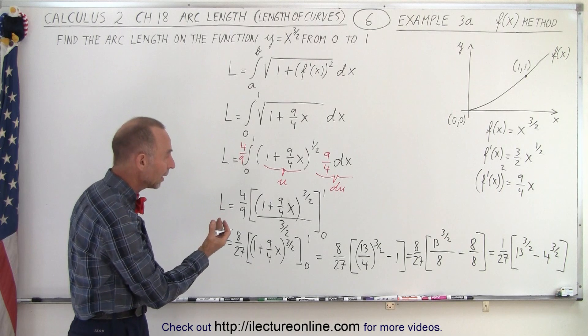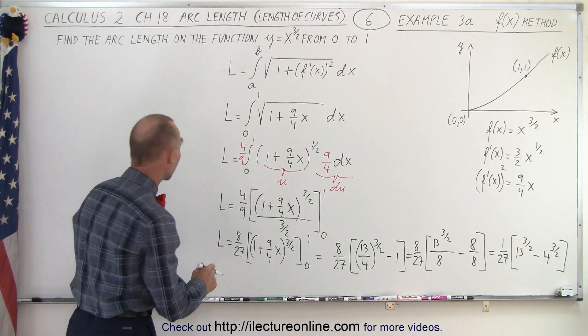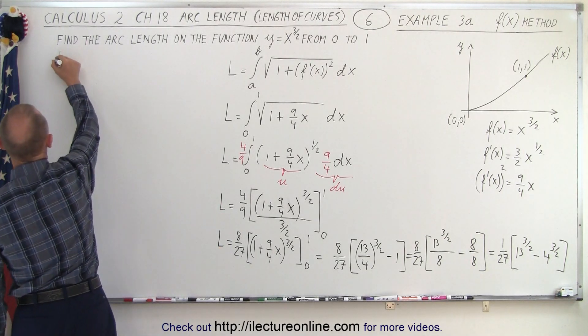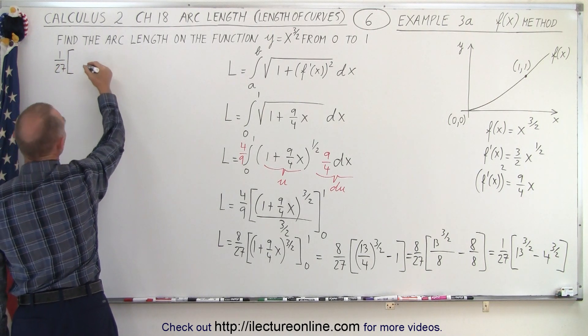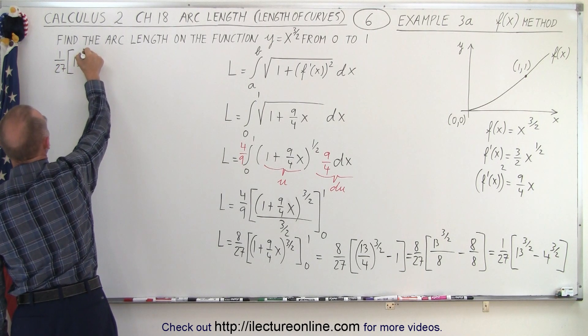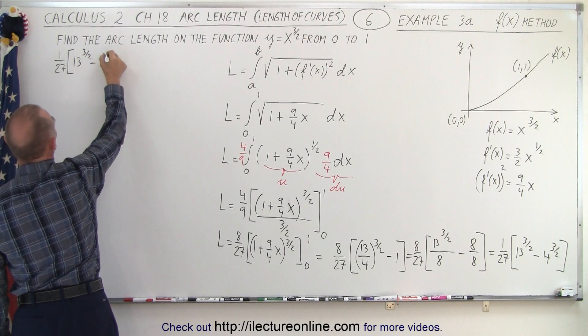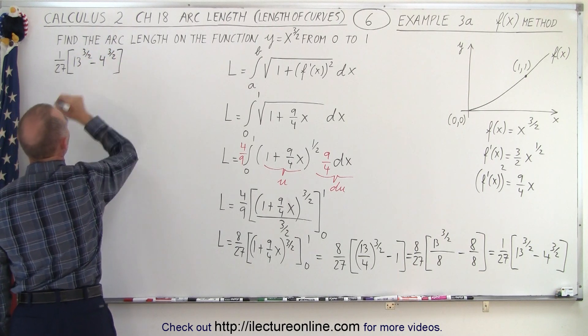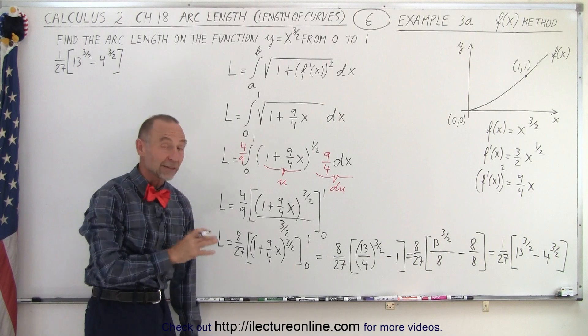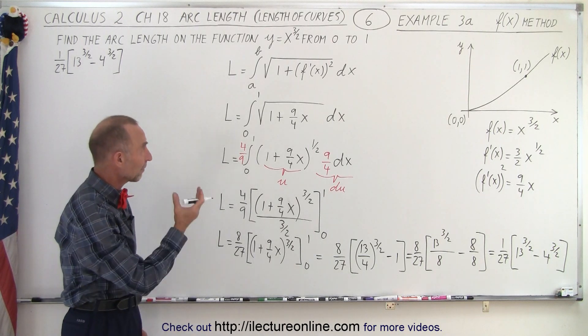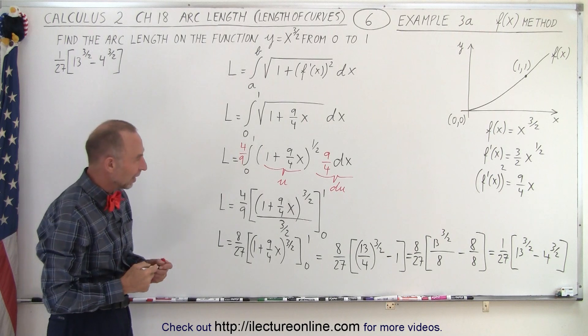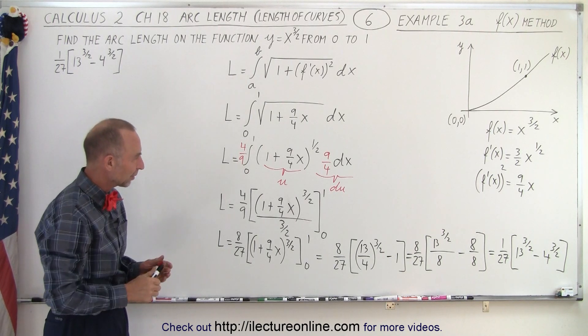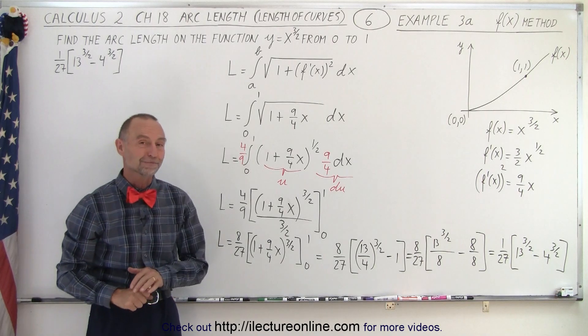So let's write that answer down, we have one over 27 times 13 to the three halves minus four to the three halves power. All right and so that's how we do it using the method where we have f of x. Next video we do it when we have f of y, so stay tuned and we'll end up with the same, hopefully same result.